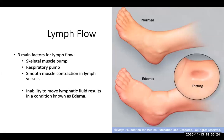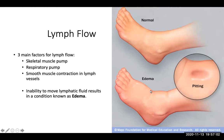There are three main factors for lymph flow. The skeletal muscle pump — contraction of your muscles — helps squeeze against those lymphatic vessels to cause the lymph to continue moving. The respiratory pump — changes in breathing — will cause pressure differences that help lymph flow back up against gravity. And smooth muscle contraction in the lymph vessels themselves. The inability to move lymphatic fluid will often result in edema, which is swelling — usually a buildup of fluid. It can occur in your ankles and feet, and pitting may occur where a depression made by your finger stays rather than popping back to normal.